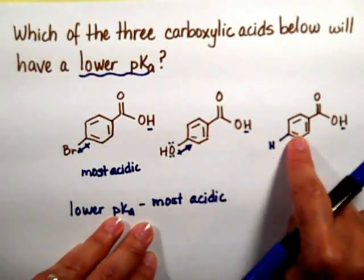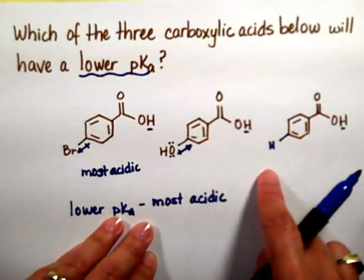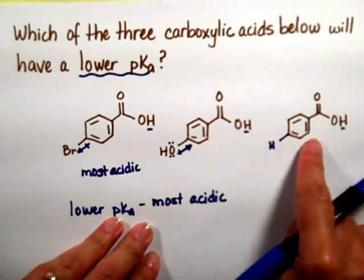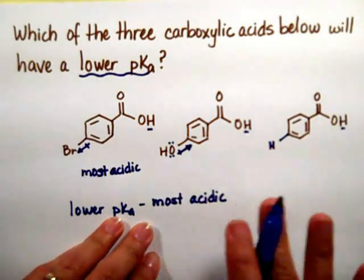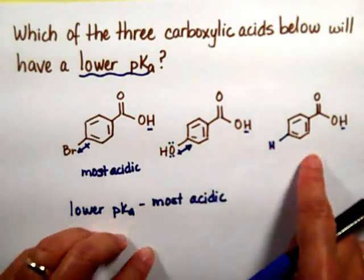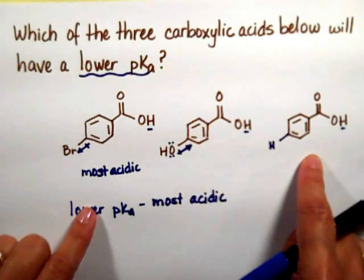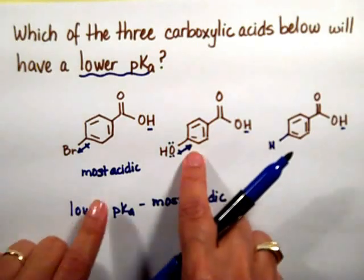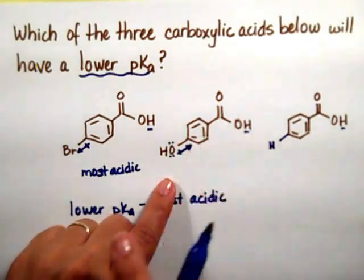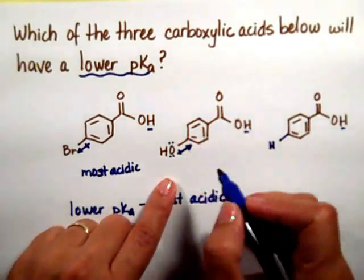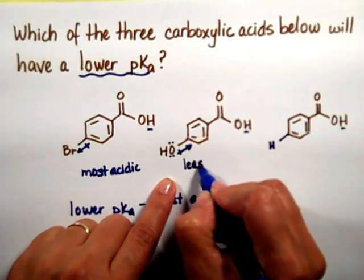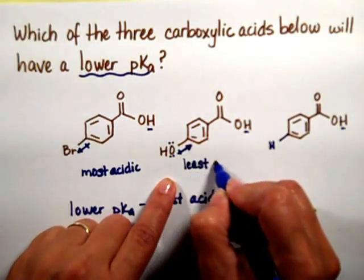The hydrogen cannot donate or take electron density away, so that compound is going to be right in the middle — less acidic than the one with the halide. But the compound with the oxygen group is going to be the least acidic of the three carboxylic acids.